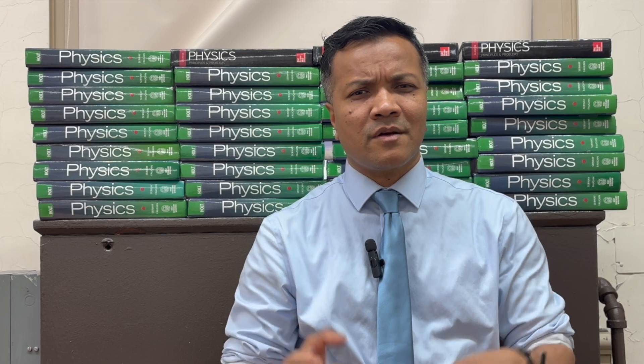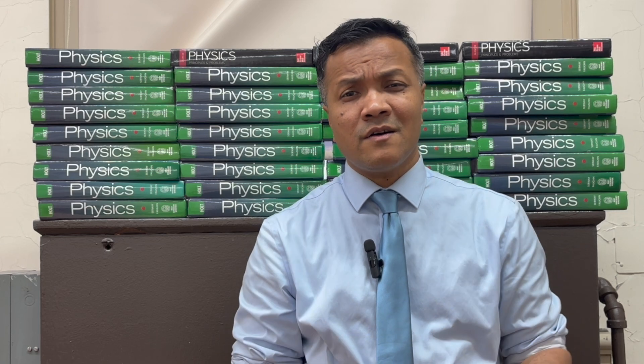A first degree polynomial you're going to call constant velocity, and you'll discover why. A second degree polynomial you're going to call constant acceleration, and you're going to discover why.